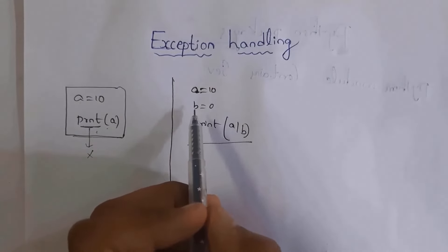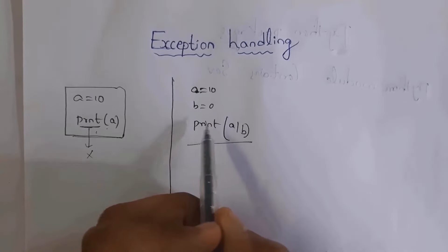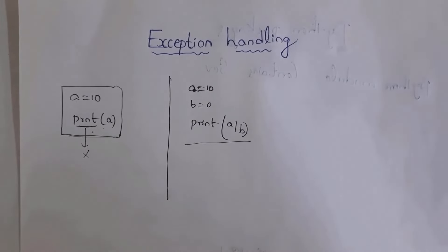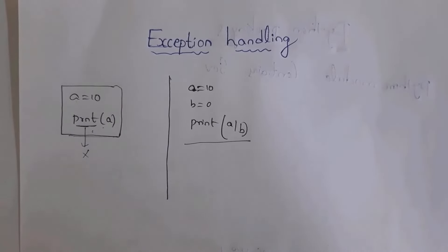In this example I have written a = 10 and b = 0, and then print(a / b). We cannot divide any number by 0 — if we do, it will display an error. This error is known as an exception error. Normally we call this a runtime error. A compile-time error means the Python program written in high-level language cannot get converted into machine-understandable language.